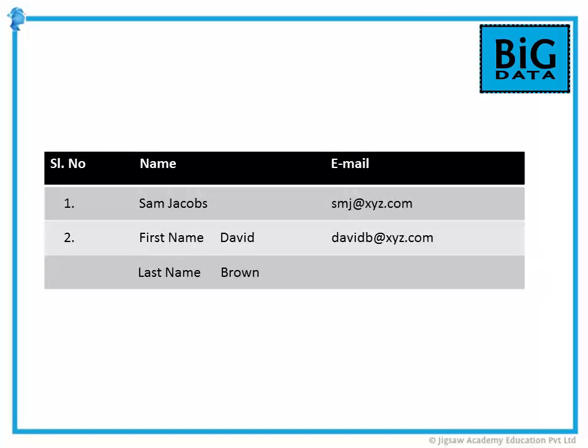An example of semi-structured data shown on screen indicates that entities belonging to the same class can have different attributes even if they are grouped together. Now that we have examined the way data arrives and is presented, let us move on to the elements that characterize this data.